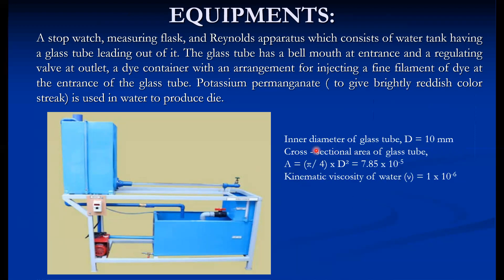The diameter of the glass tube is 10 mm. The cross-sectional area of the glass tube is 7.85 × 10⁻⁵ m², calculated using π/4 × D², which is required for calculating velocity and subsequently the Reynolds number. The kinematic viscosity of standard water is 1 × 10⁻⁶ m²/s. These are the specifications of the equipment.